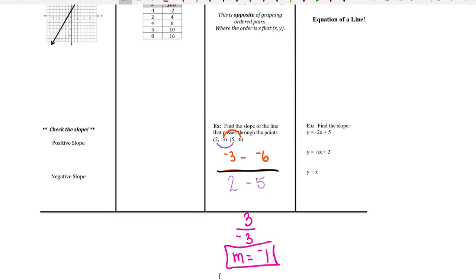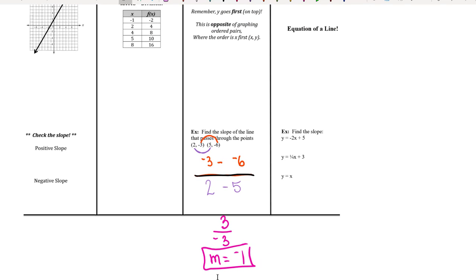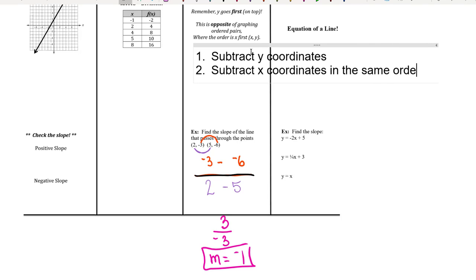So we're still finding the difference in the y's. I guess I should label this step 1. Subtract the y's. And then we subtract the x coordinates in the same order that you subtracted the y coordinates. And then you write it as a ratio. And then you simplify that ratio. If it can be simplified, leave it improper. If it is improper.